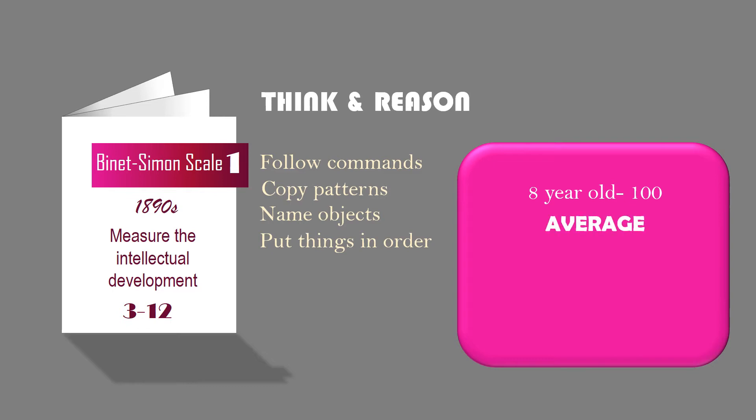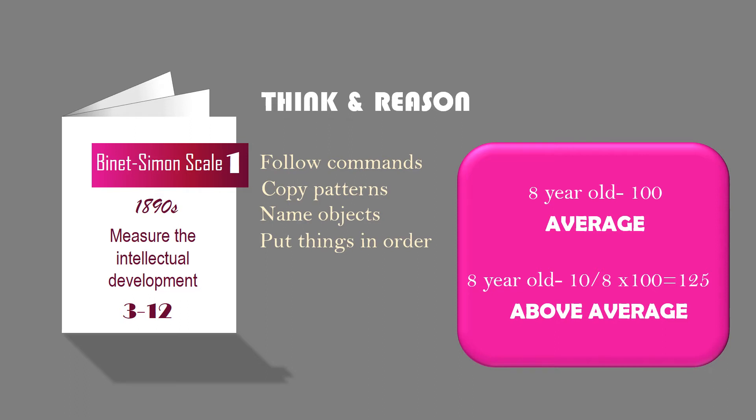Meanwhile, an 8-year-old who passes the test for 10-year-olds has an IQ of 10 over 8 times 100, or 125. This child's IQ is above the average for his or her chronological age — he or she is brighter or more superior than other children in his or her age. Binet's and Simon's work influenced the growth of the intelligence testing movement.